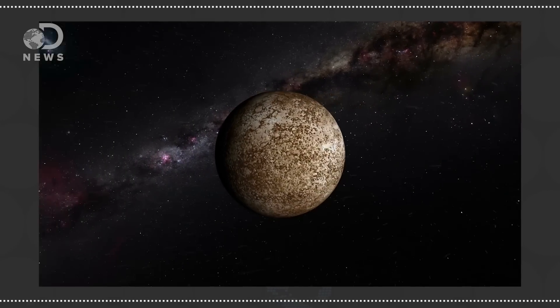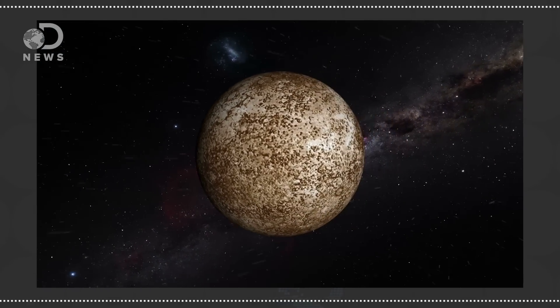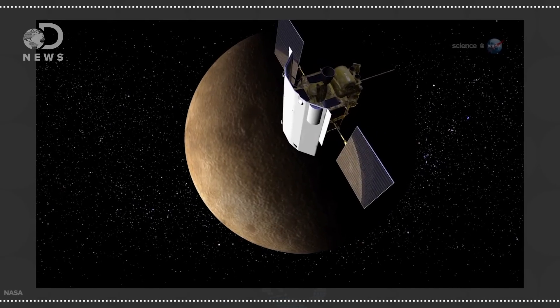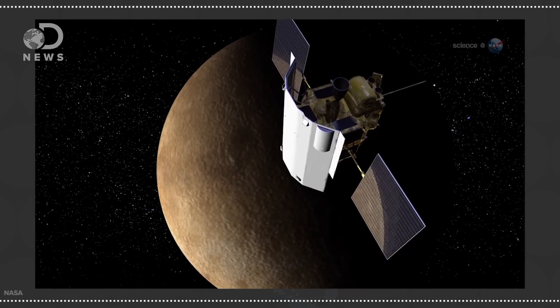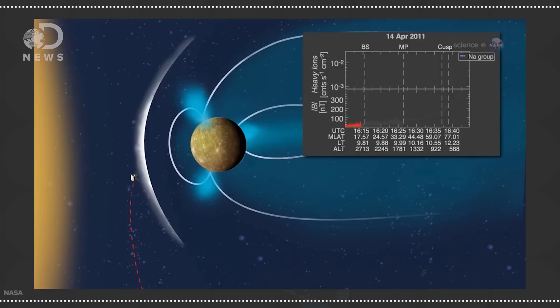Mercury is the innermost planet in our solar system, it's both really hot and cold, it's zipping around the sun every 88 days, but to be honest, we didn't know much about it. So, NASA launched MESSENGER in 2004 to explore it, it arrived in 2011 and has been orbiting ever since.